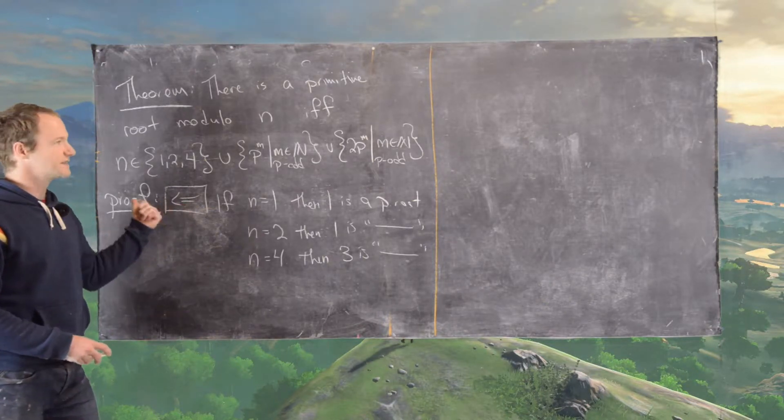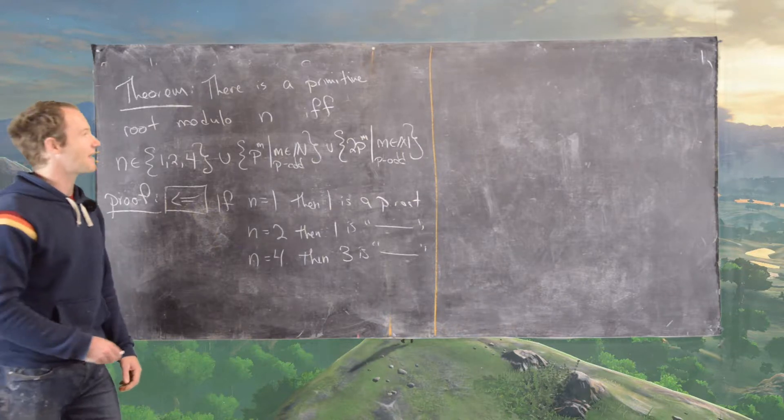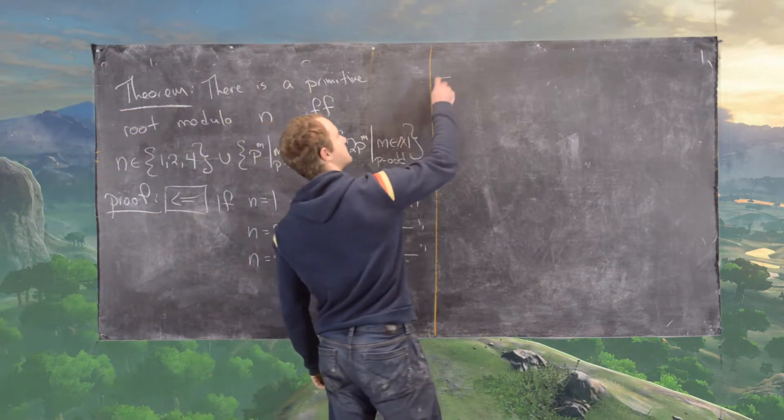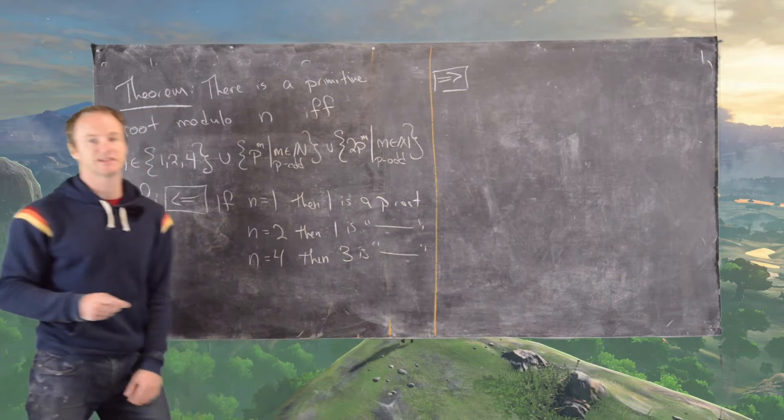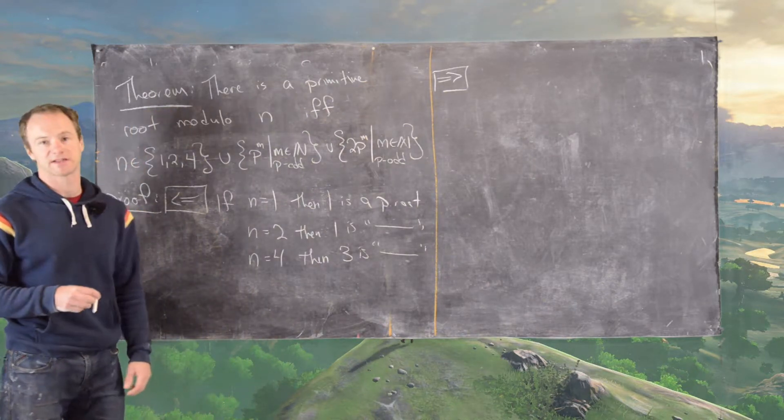So that concludes this direction of the proof. Now let's go in the other direction of the proof, and we'll do this other direction by contrapositive.